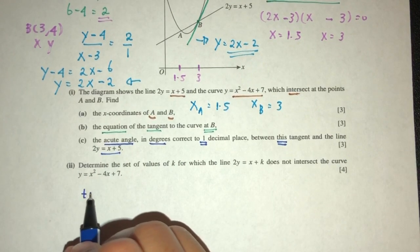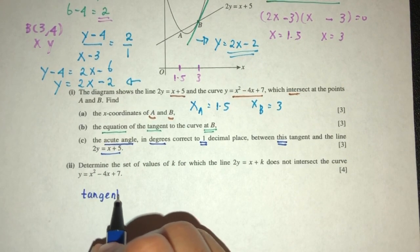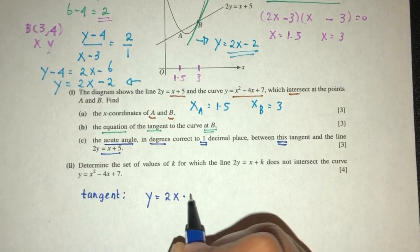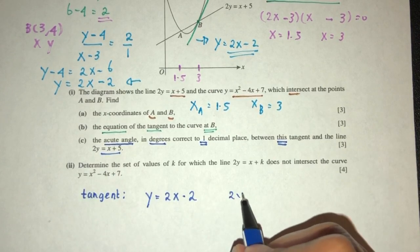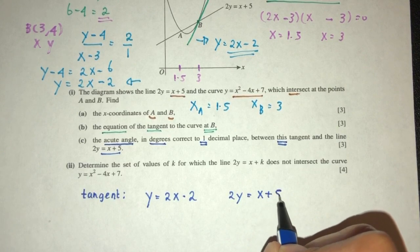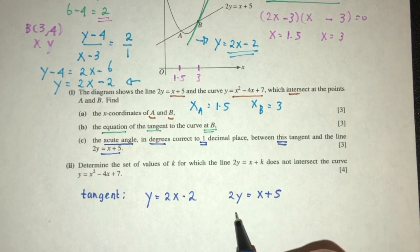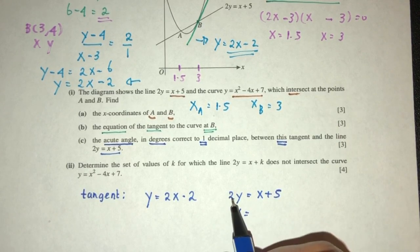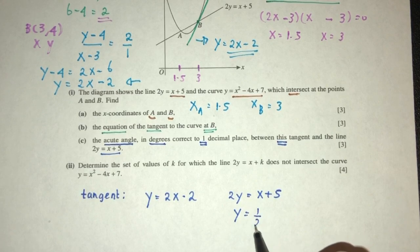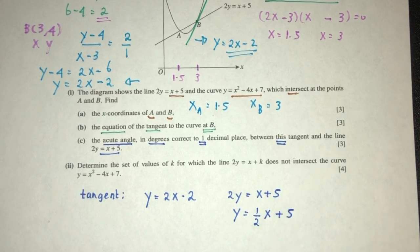The tangent was found to be y equal to 2x minus 2, and the line 2y equal to this plus this. So, we have to find the gradient for this line. We have to divide by 2. Make this become subject. That will be half x plus 5 over 2.